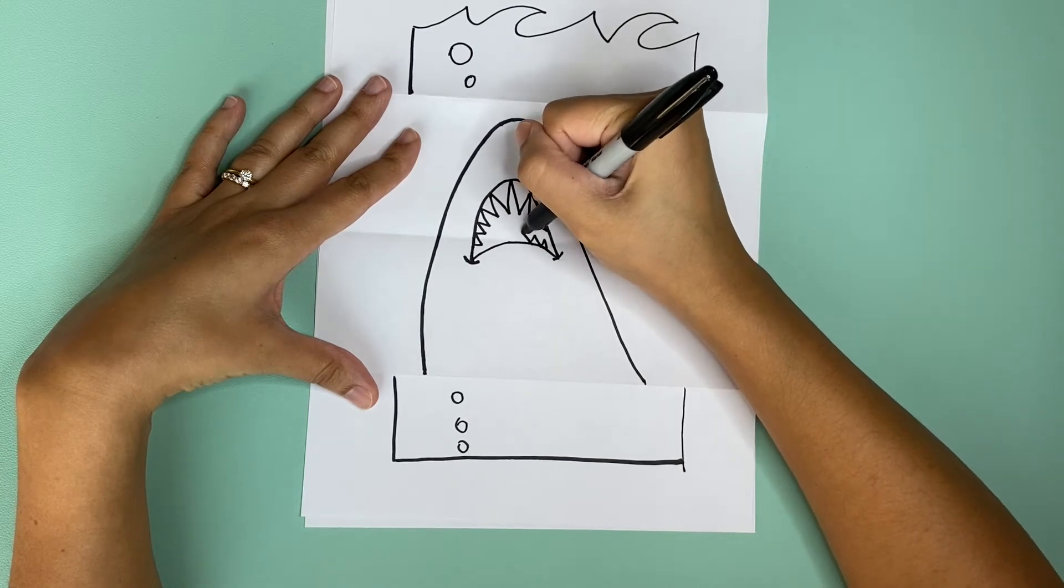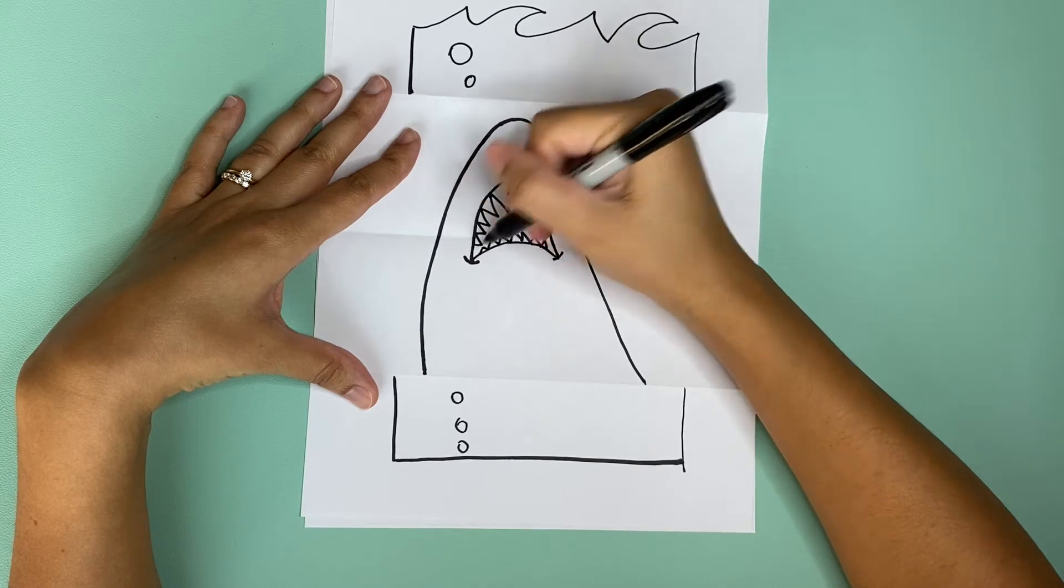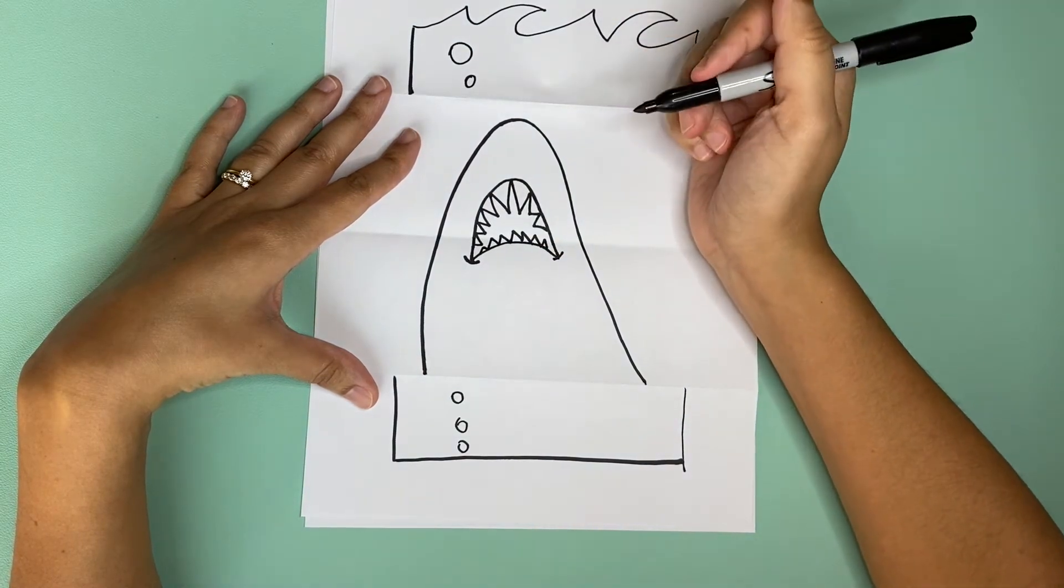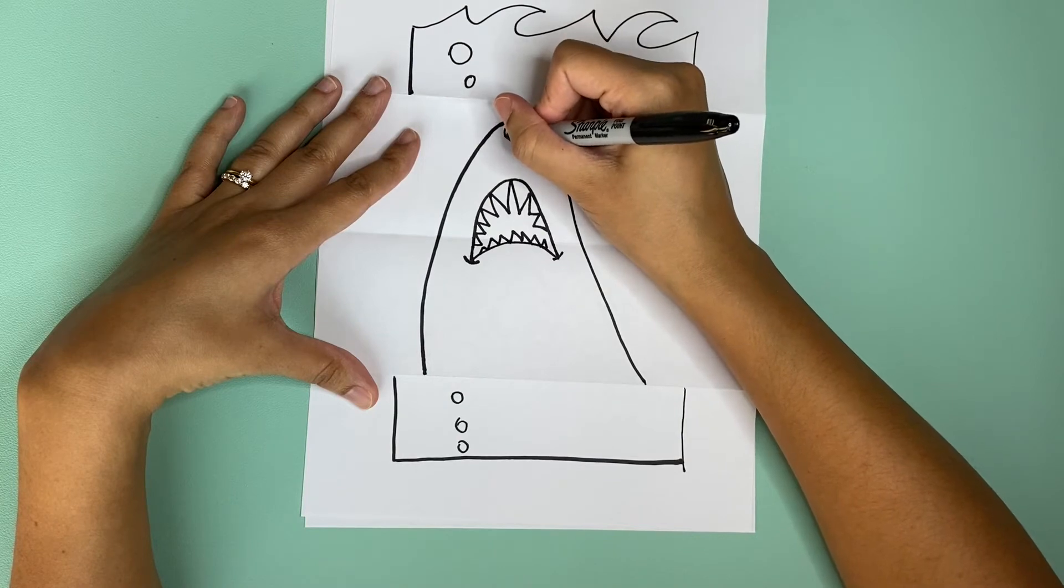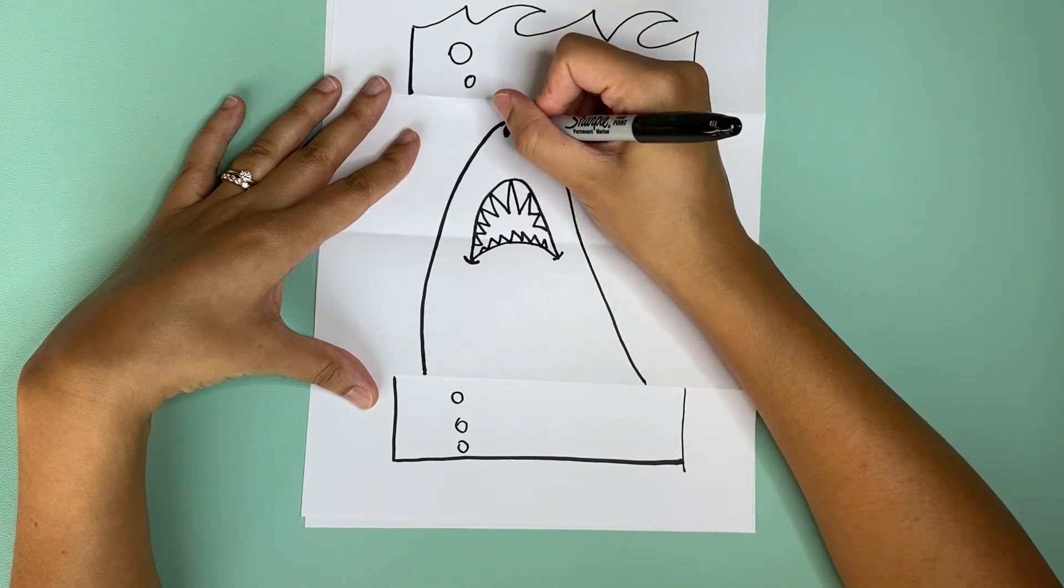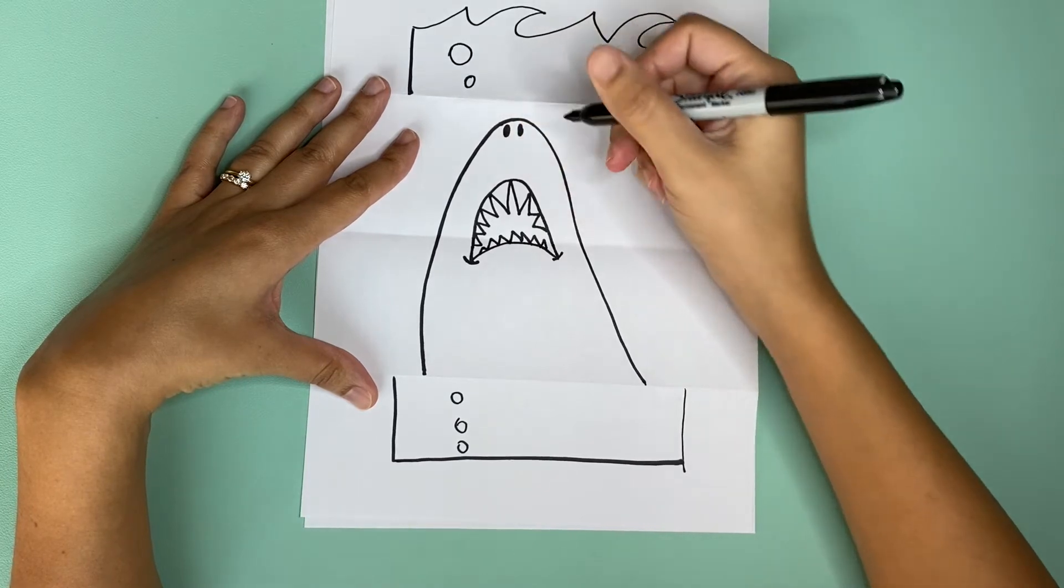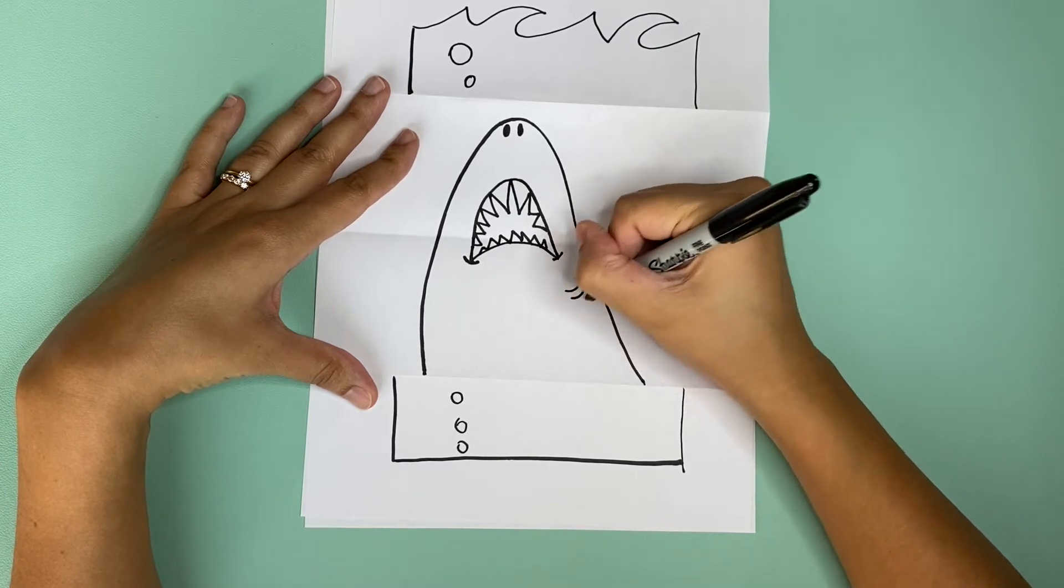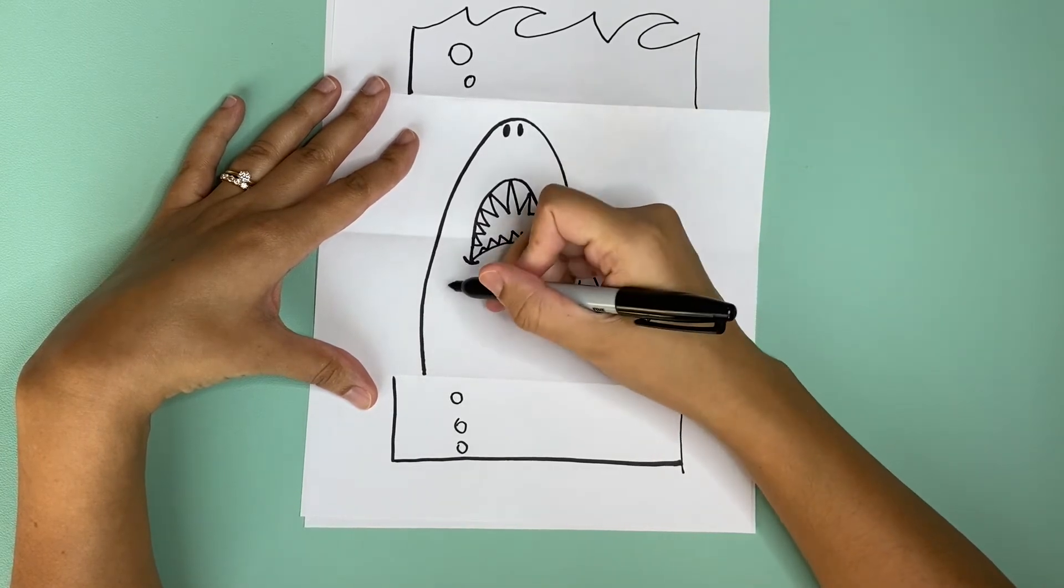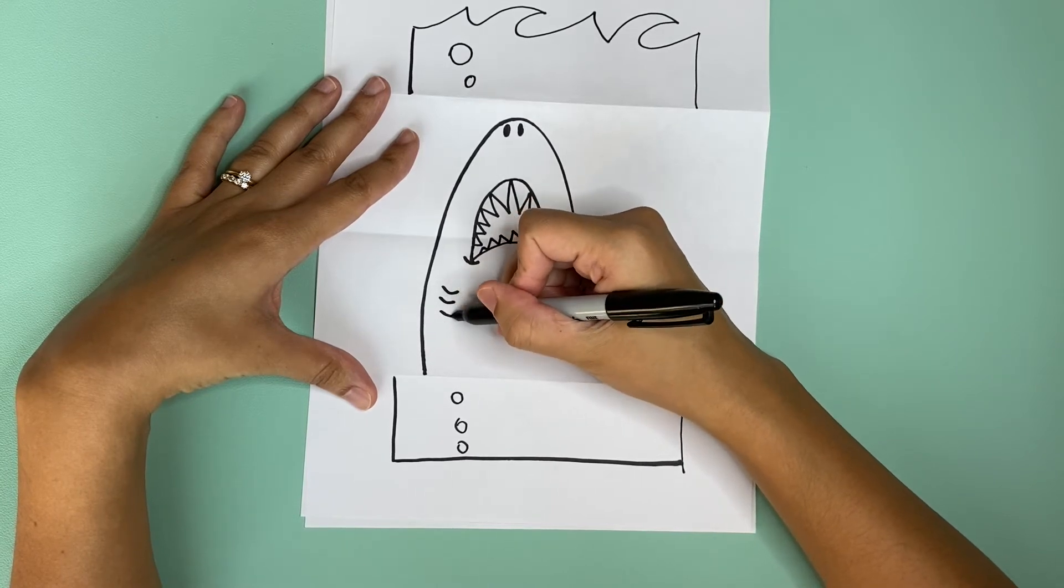Little triangles all the way to the edge and we're going to make two circles for the nose. We'll make some gills by drawing three curves and another three curves on this side to match.